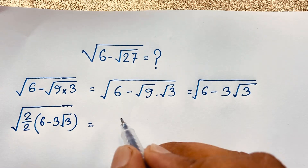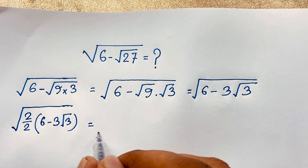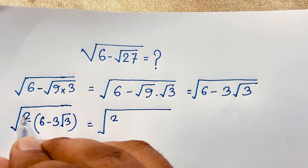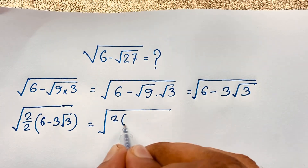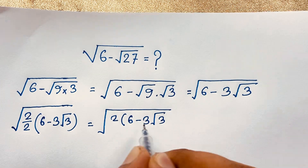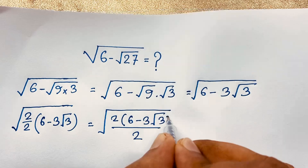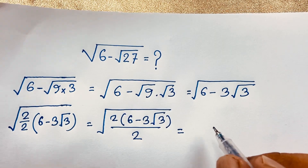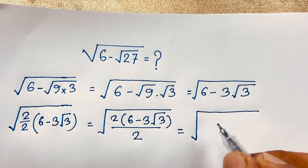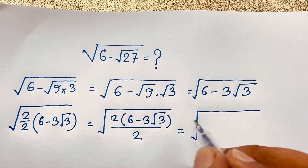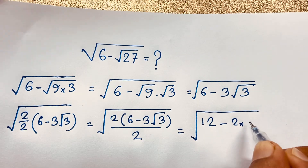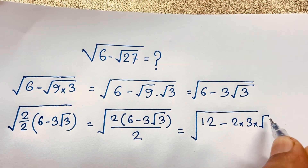Now I can see this expression will be square root of 2. The twos cancel out, and we find the previous line again: 6 minus 3 square root of 3 over 2. Now under the square root we have 2 times 6, which is 12, minus 2 times 3 times square root of 3.